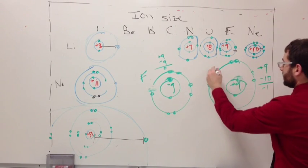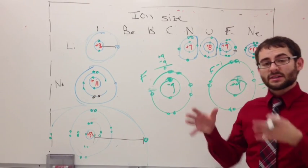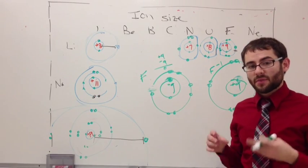And now this is fluorine minus one. So whenever you're going to negative, the size gets a little bigger. Whenever you're making something positive, the size gets a little bit smaller.